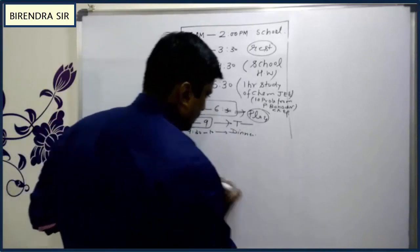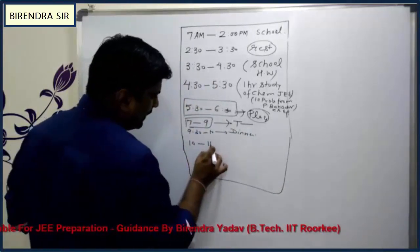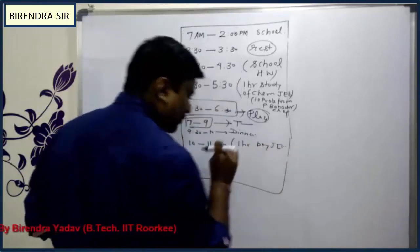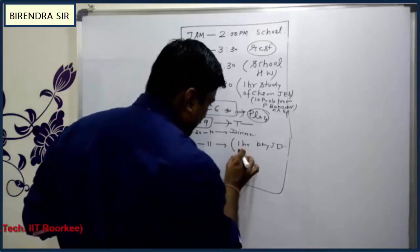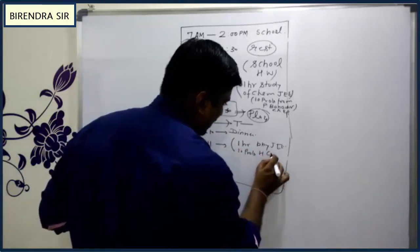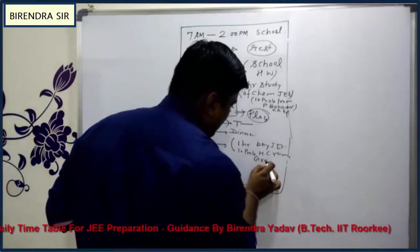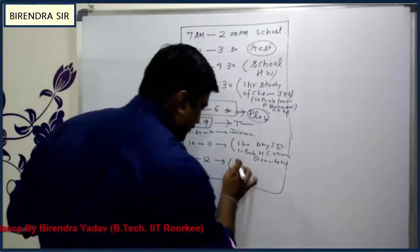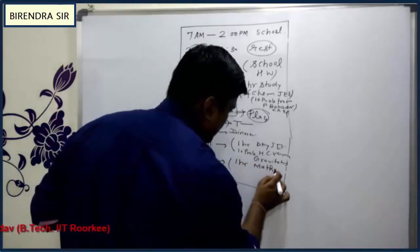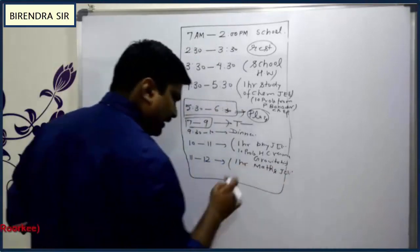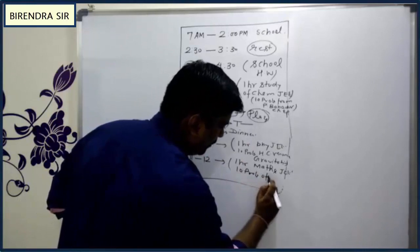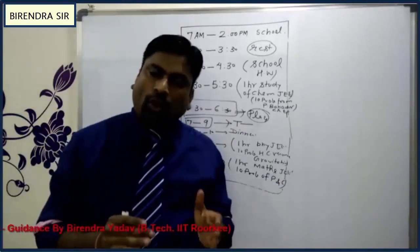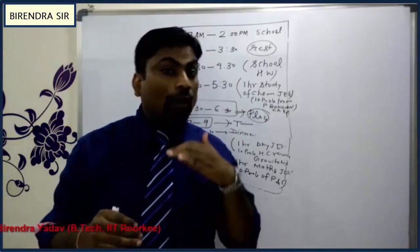From 10 to 11, write one hour of physics for JEE — for example, 10 problems from H.C. Verma, chapter: gravitation. From 11 to 12, write one hour of mathematics for JEE — for example, 10 problems of permutation and combination. This is how you prepare Monday's schedule on Sunday night.